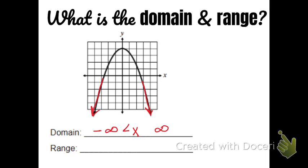So x is scrunched in between negative infinity and positive infinity. Now let's look at the range — how far down does this graph go? The arrows at the bottom of the lines tell us it goes all the way down to negative infinity. But there is a stopping point at the top. It goes up to 4, so y is scrunched in between negative infinity and 4.